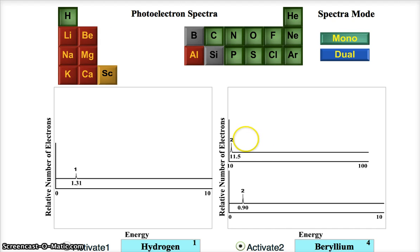Beryllium. The first peak, even though it's now split because we don't have it long enough. And there's that much of a big energy difference. The first peak at 11.5 is 1s2. And then we have 2s2 for beryllium.